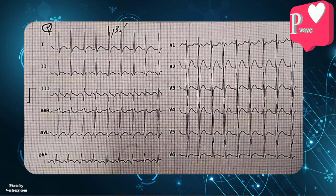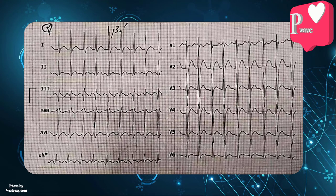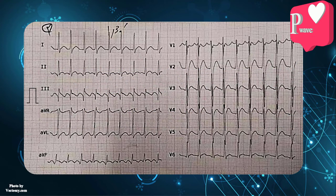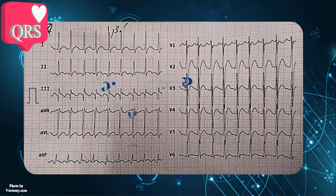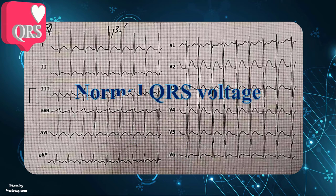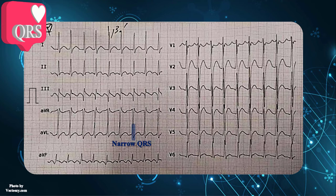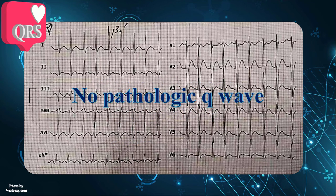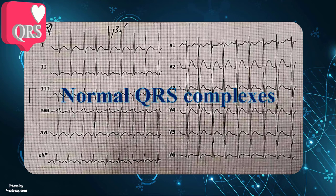Next is wave morphology and intervals. Thanks to atrial flutter, the P waves are inverted in inferior leads and upright in V1. Remember that, without exception, sinus P waves are always expected to be positive in leads 1, 2, and AVF. But here, P waves are inverted in inferior leads and therefore are non-sinus due to the arrhythmia. The amplitude of QRS complexes is greater than 5 mm in limb leads and 10 mm in precordial leads. None of the criteria of ventricular hypertrophy is present, so the complexes are neither low nor high voltage. The QRS complexes are narrow. The transition zone occurs in V4 and therefore is normal. No pathological Q wave is present in this strip. In summary, the QRS complexes have no abnormal changes.